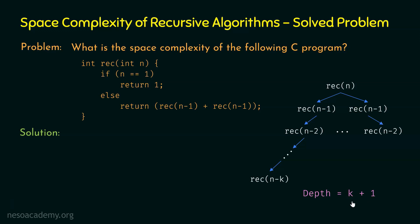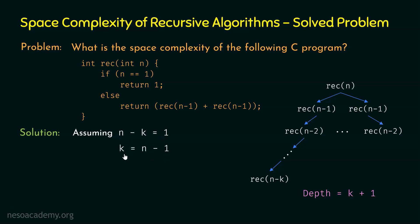Now we need to represent k in terms of the input size n. We have assumed this is the last level, so n minus k must be equal to 1, so that the base case is satisfied and there are no more function calls. Hence, n minus k equals 1, which gives us k equal to n minus 1. Replacing k with n minus 1, we get depth equal to k plus 1 equals n minus 1 plus 1 equals n. So the depth of this recursion is n.